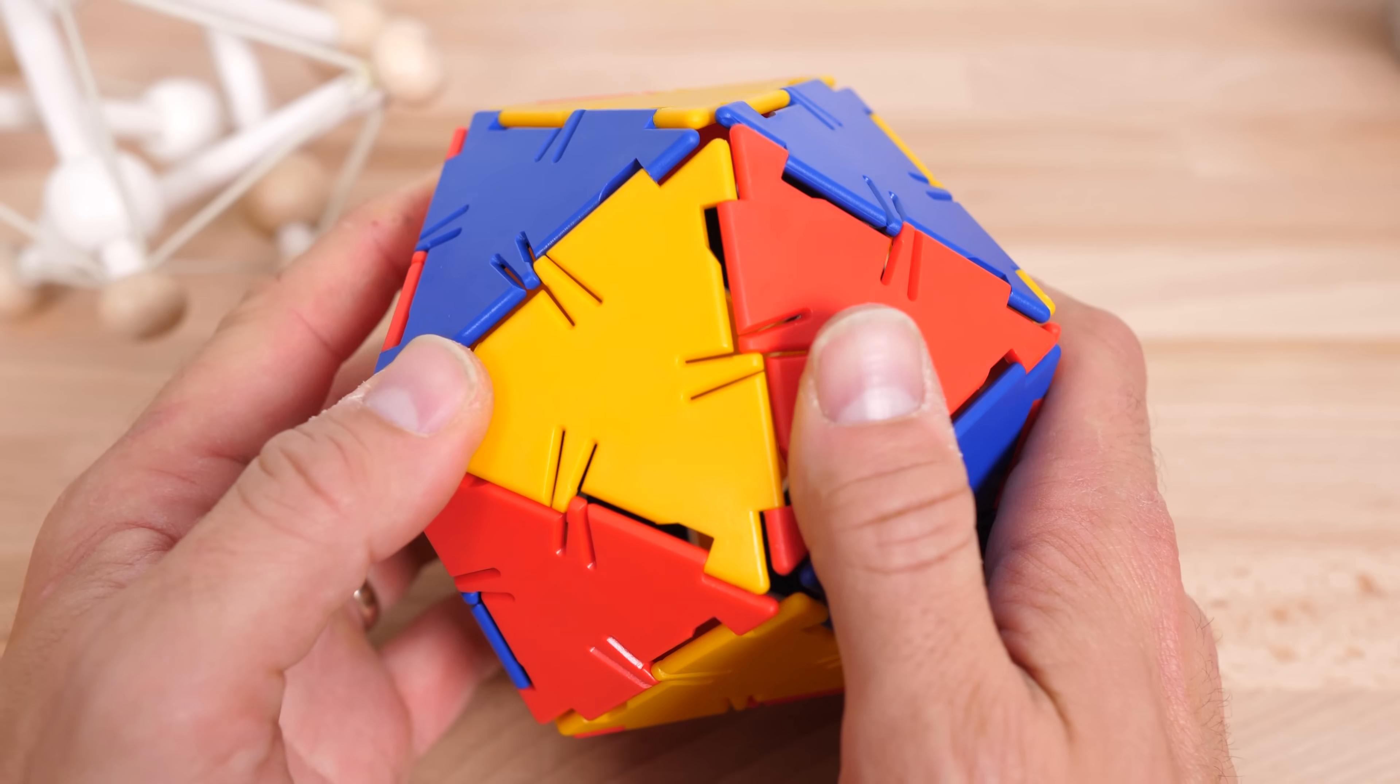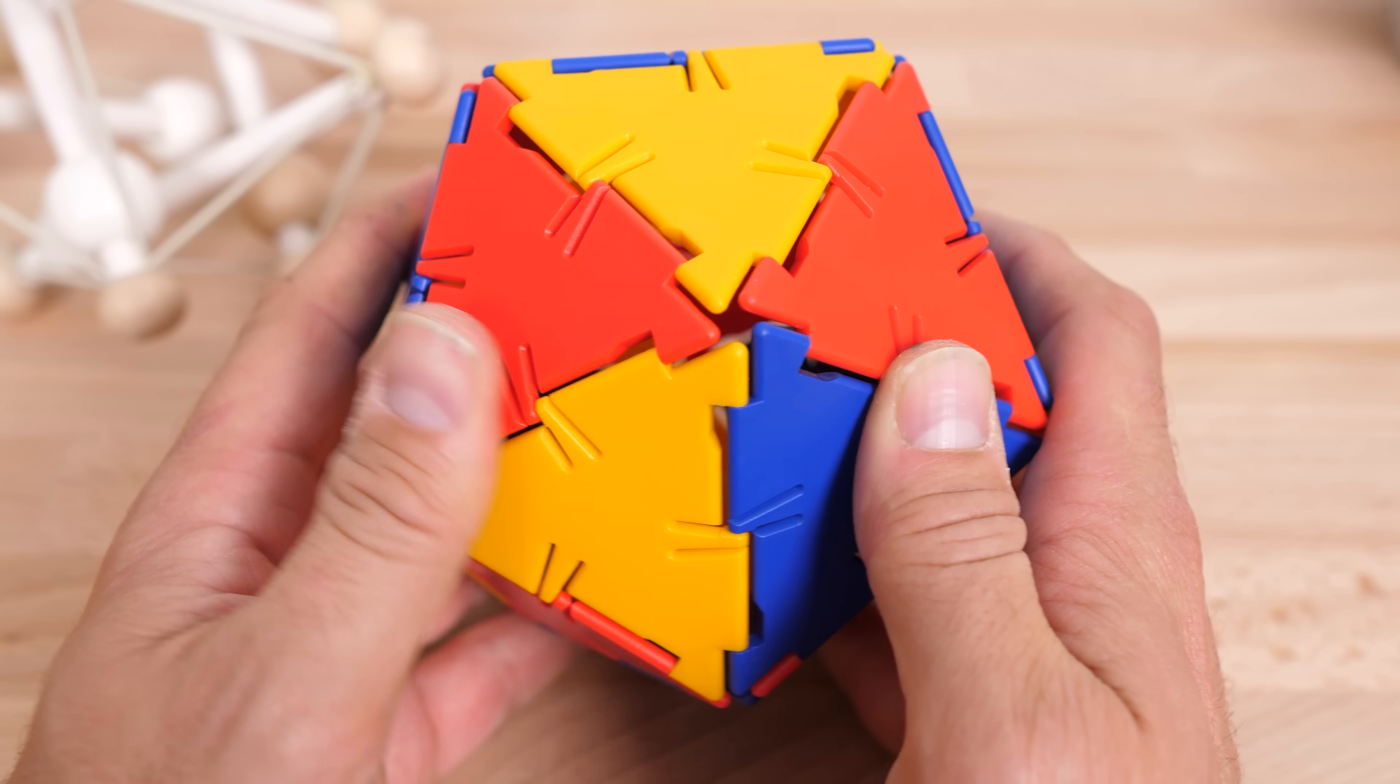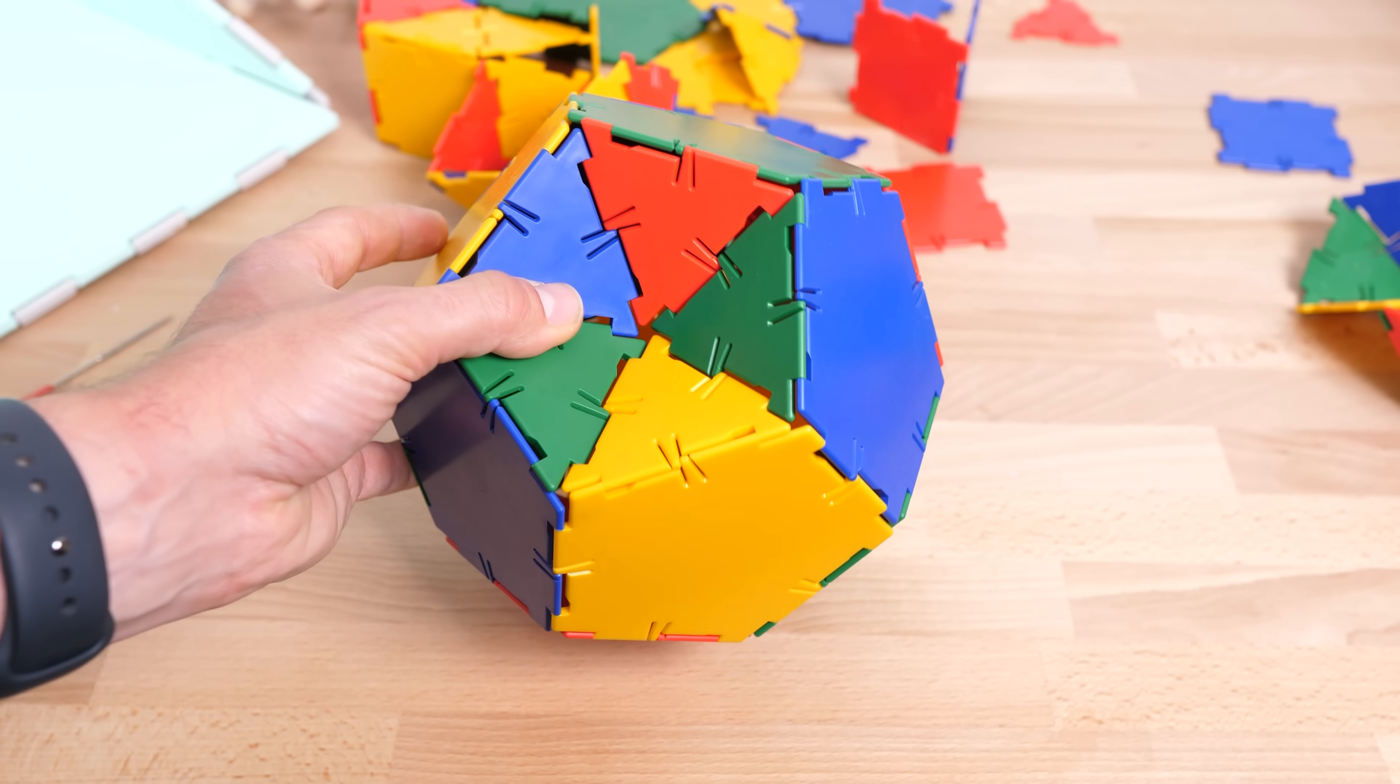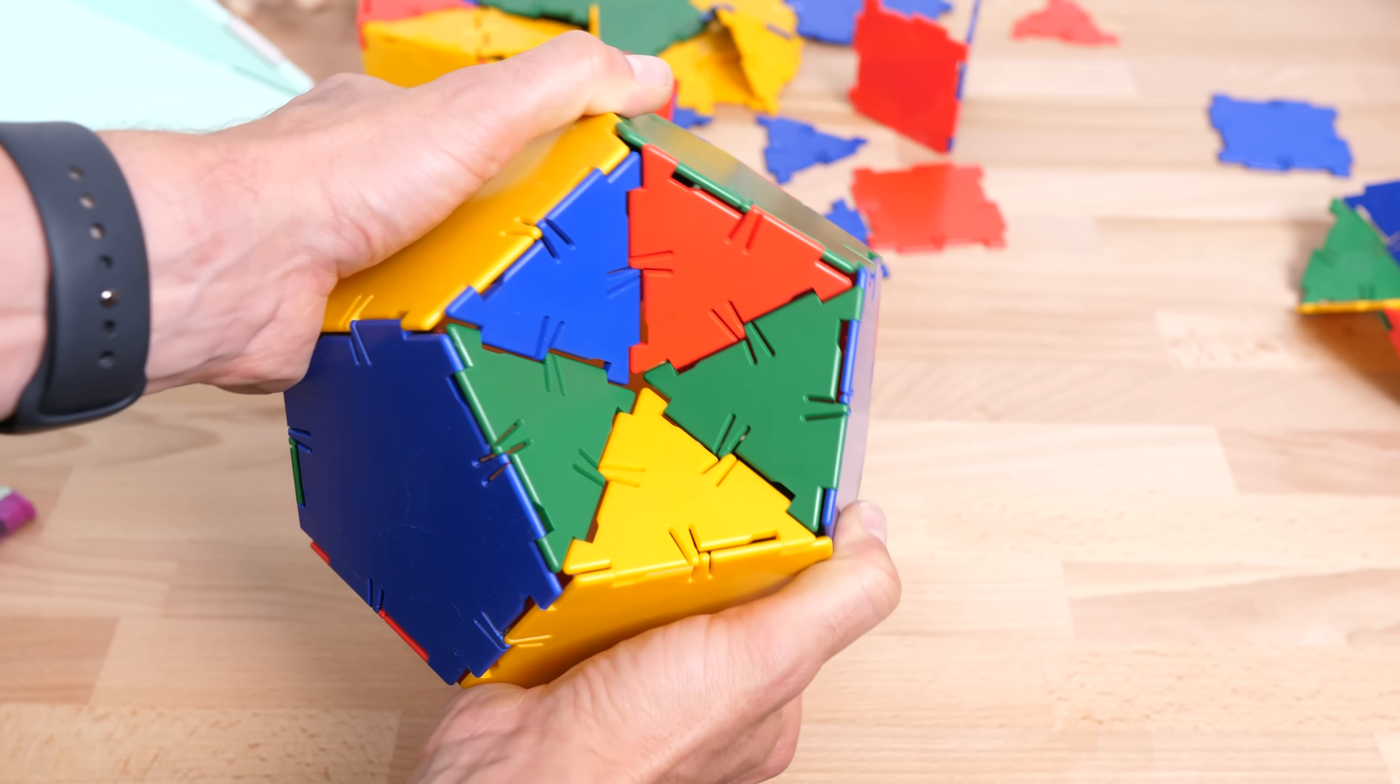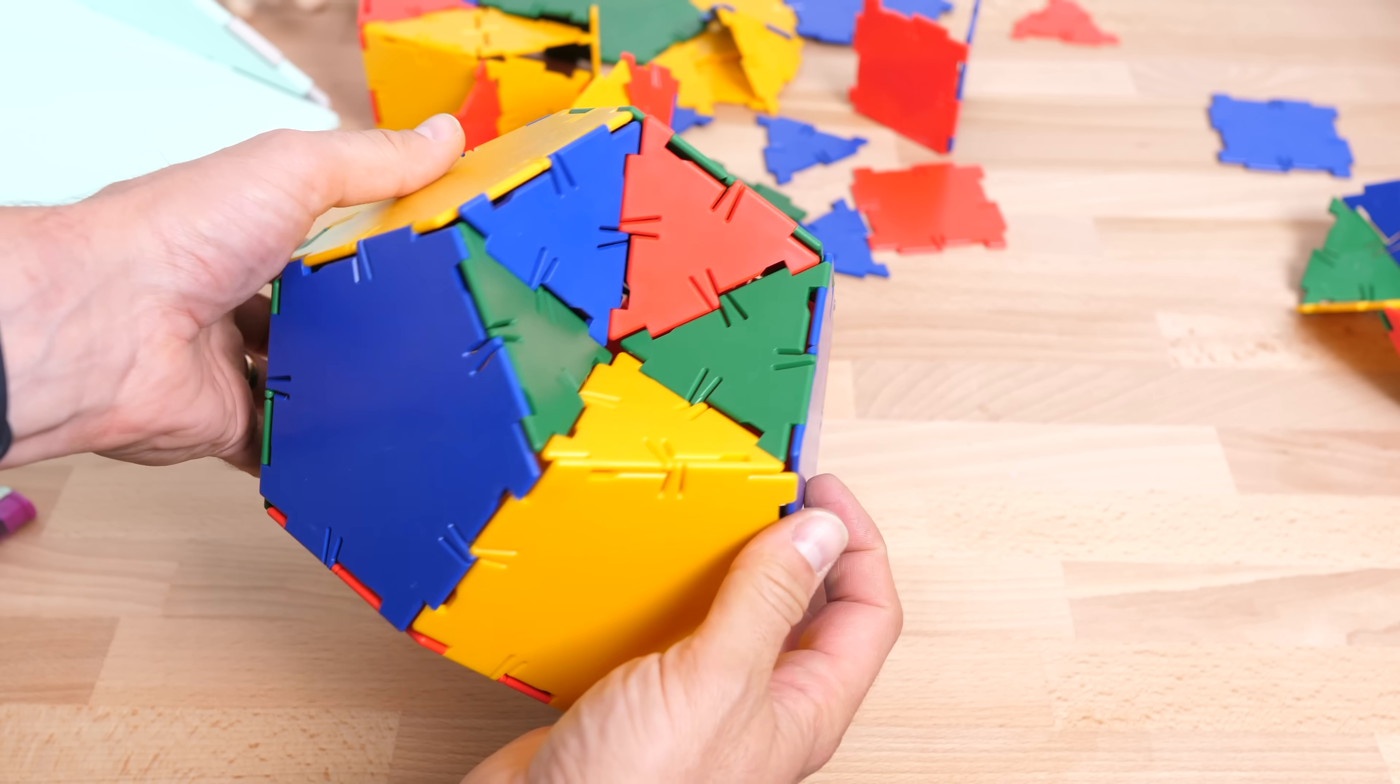Augustine Cauchy proved in 1815 that actually all convex polyhedrons are rigid. So Euler was at least partly right. But what if a polyhedron was concave? What if it had indented bits, like this? This is a concave polyhedron, for example, though it's rigid. And for a long time, it wasn't known whether a flexible, concave polyhedron existed.